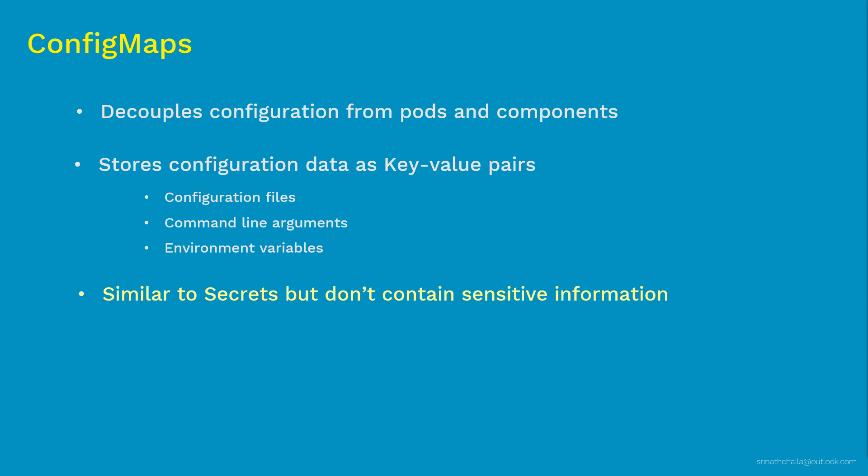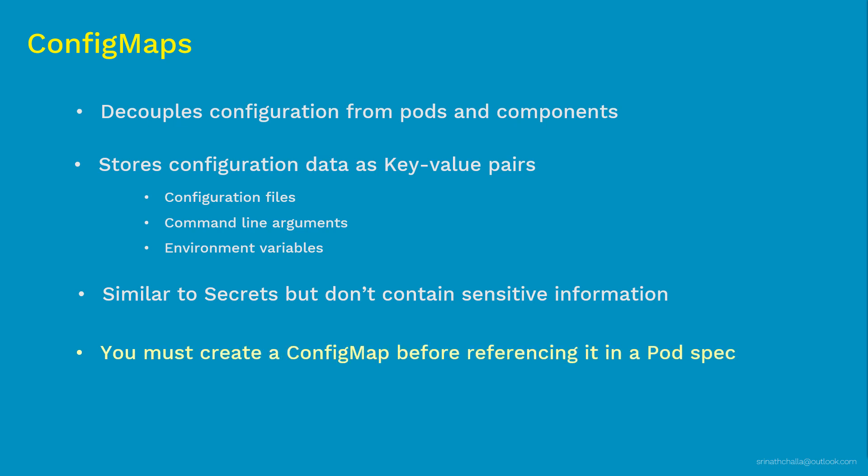We will look at Secrets in the next video. One more thing: you must create the ConfigMap before referencing it in the pod spec. If you reference a ConfigMap inside the pod spec that doesn't exist, the pod won't start. Also, if you reference keys inside a pod that don't exist in the ConfigMap, it will prevent the pod from starting. So before you reference the ConfigMap and keys inside the pod spec, make sure they are created and exist. Next, let's take a look at the syntax of ConfigMap.